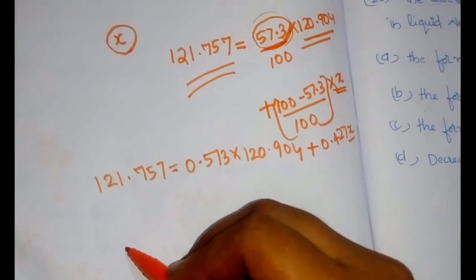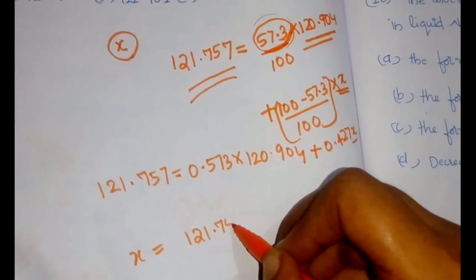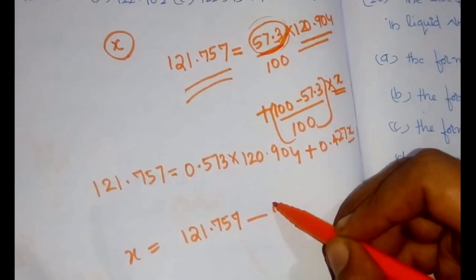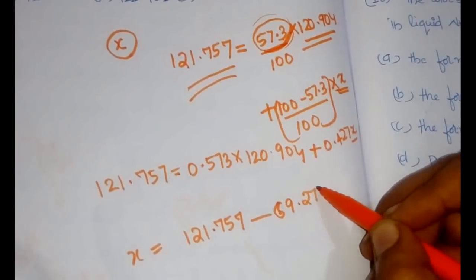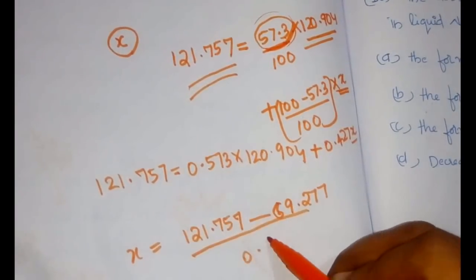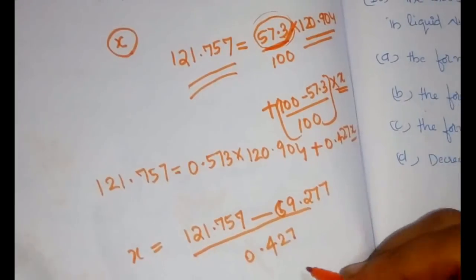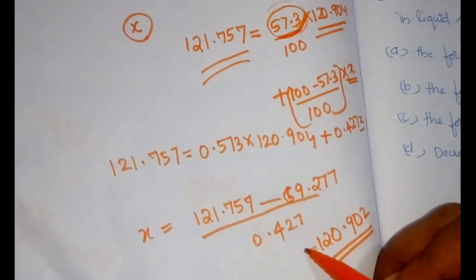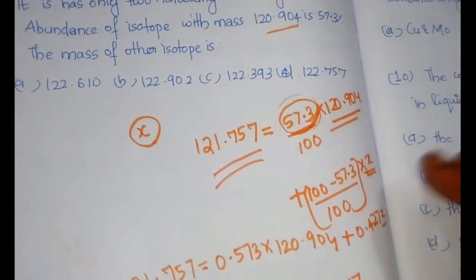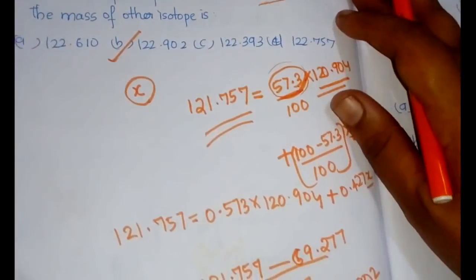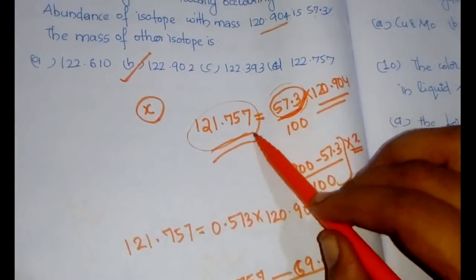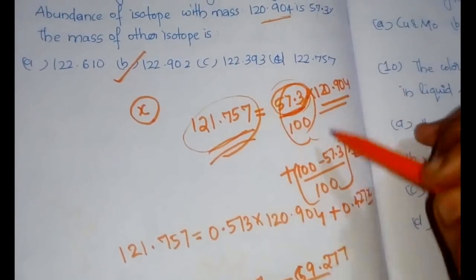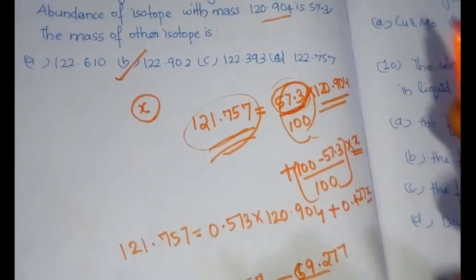We can simplify: 121.757 = 0.573 × 120.904 + 0.427x. So x = (121.757 - 0.573 × 120.904) / 0.427, which equals approximately (121.757 - 69.277) / 0.427 ≈ 122.903. The closest option would be option B.